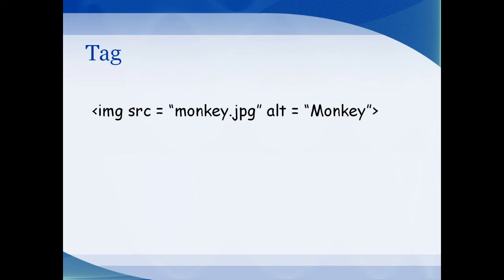The tag to put an image in is the IMG tag — IMG stands for image. SRC stands for source, which is the source of the file. In this case we're putting in a file called monkey.jpg. You do have to include the file extension — .jpg, .png, or .gif depending on the file type. Even if the extension isn't showing in your Explorer, if you leave it out the image will not show up. The file extension is necessary.